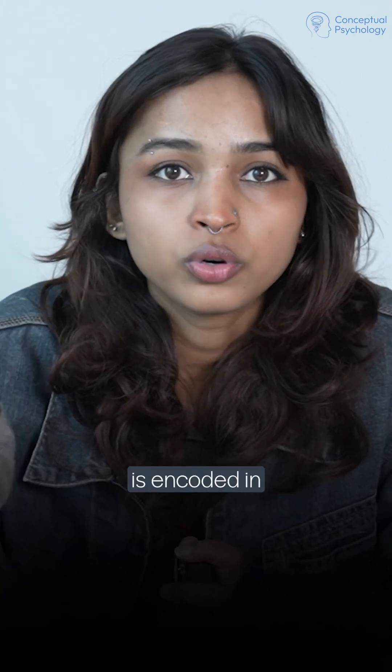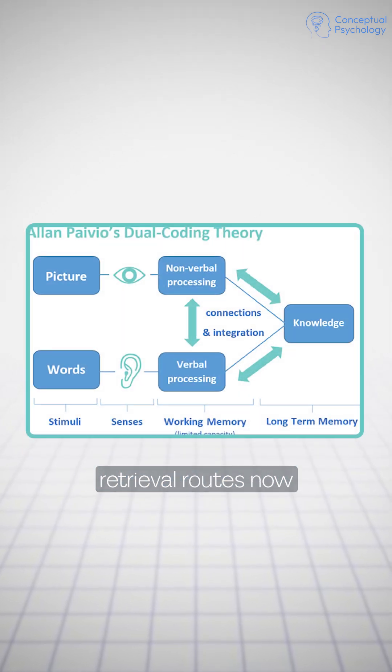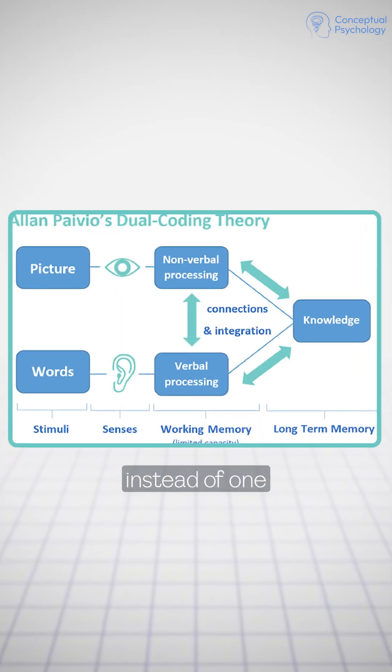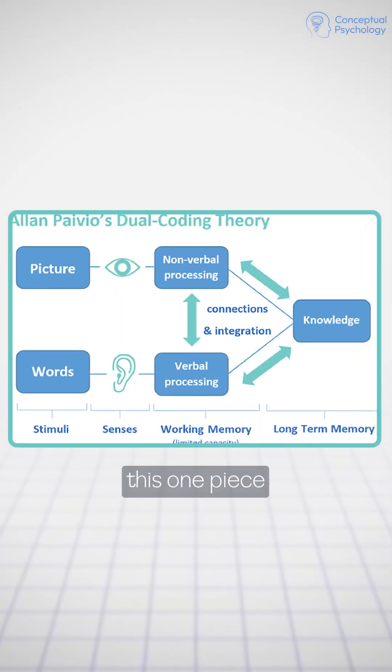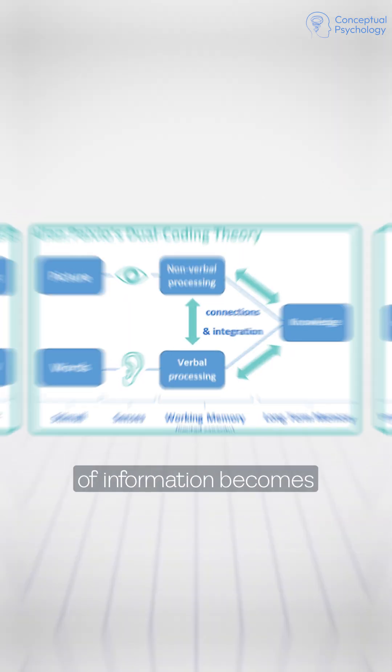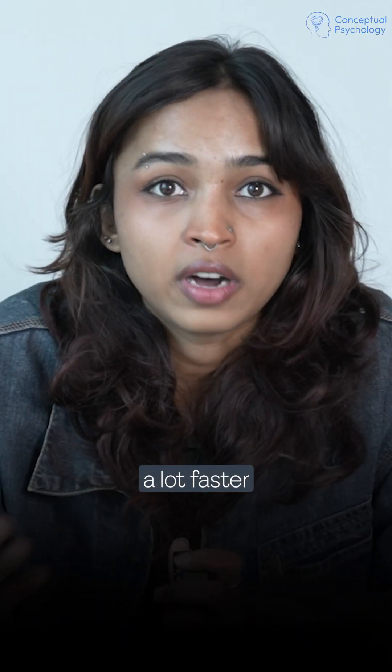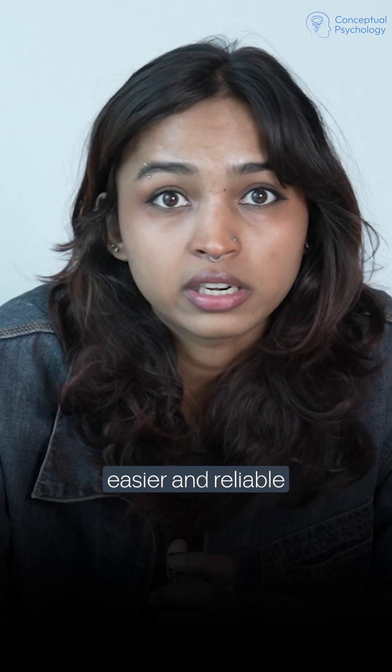So when information is encoded in both these systems, there are two retrieval routes now instead of one. Retrieval of this one piece of information becomes a lot faster, easier, and reliable.